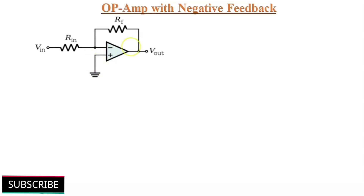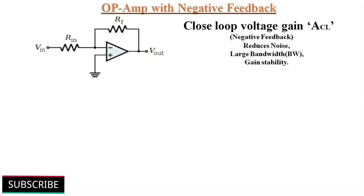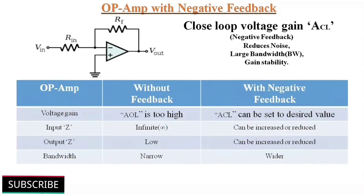Negative feedback is a part of the output fed back in phase opposition to the input. With negative feedback, the closed loop voltage gain ACL can be reduced and controlled, so that the op-amp can function as a linear amplifier. In addition to this, negative feedback also provides control of input and output impedances and amplifier bandwidth.